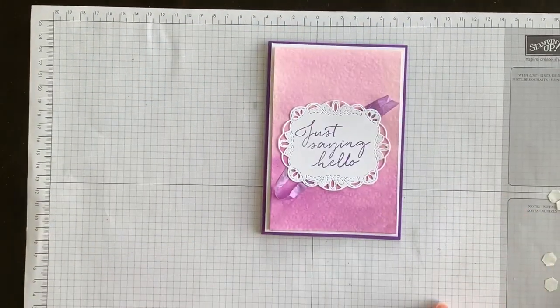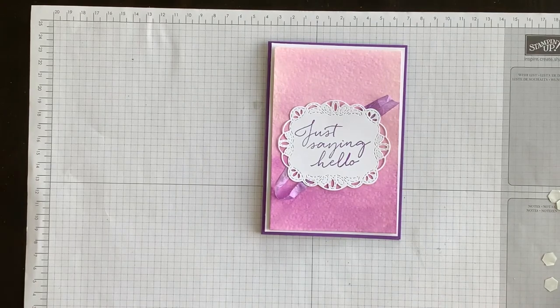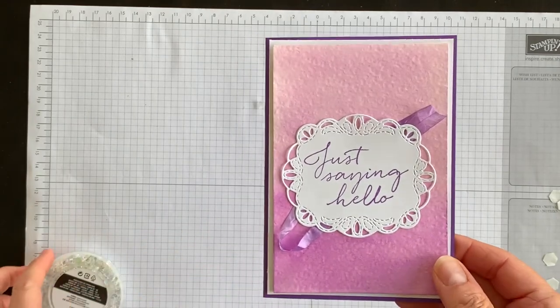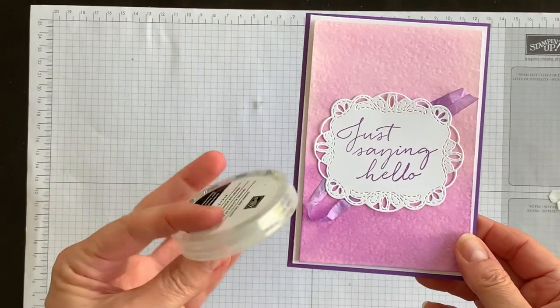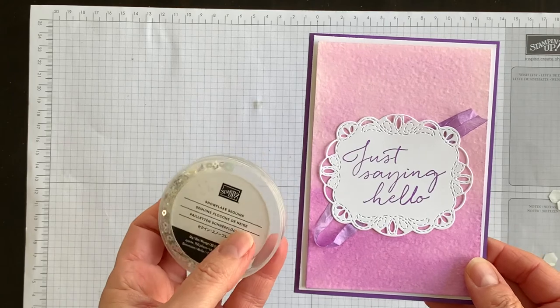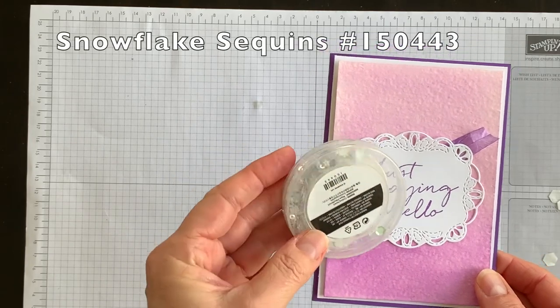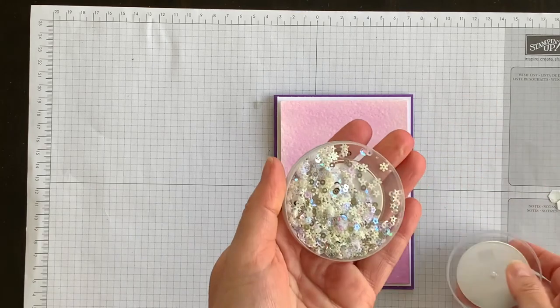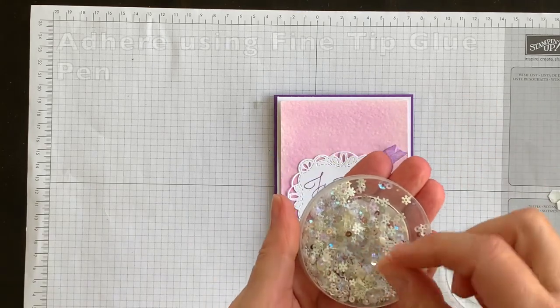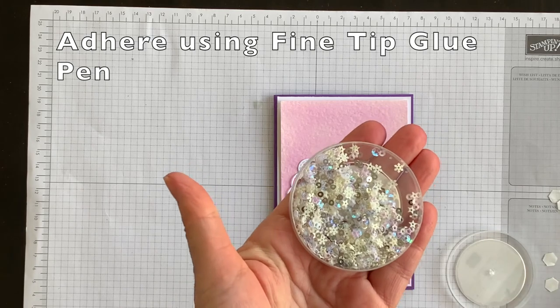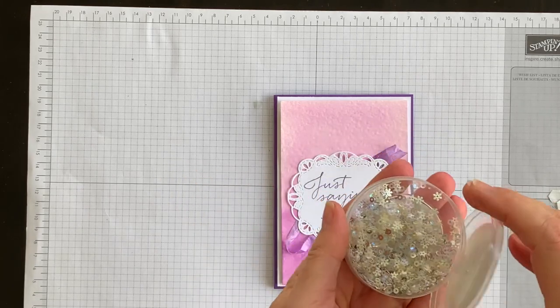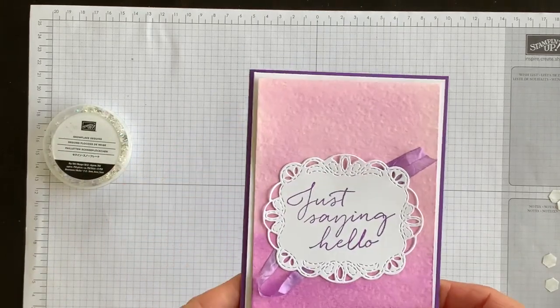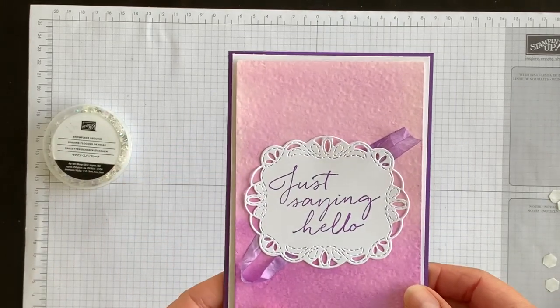And then the last thing I'm going to do to complete my card is I have some of the snowflake sequins. I think these are really pretty, and there are snowflake shapes but there's also circular shapes. And I think that adding some of these sequins to the front of my card will make a beautiful final touch. So that's what I'll do.